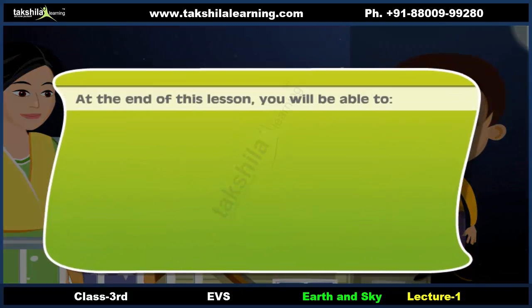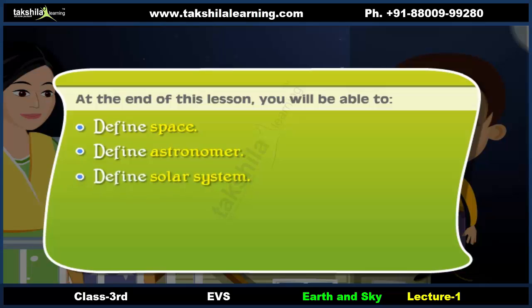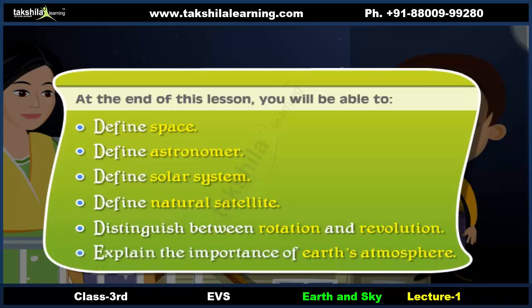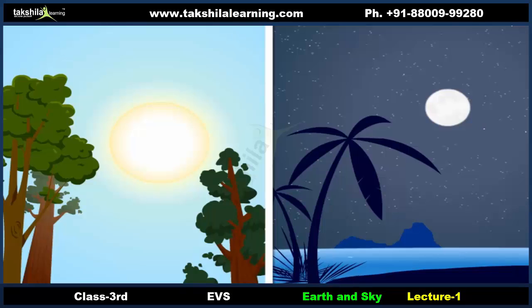At the end of this lesson you will be able to: define space, define astronomer, define solar system, define natural satellite, distinguish between rotation and revolution, and explain the importance of Earth's atmosphere.